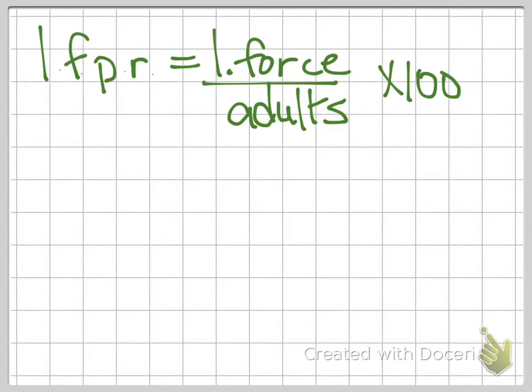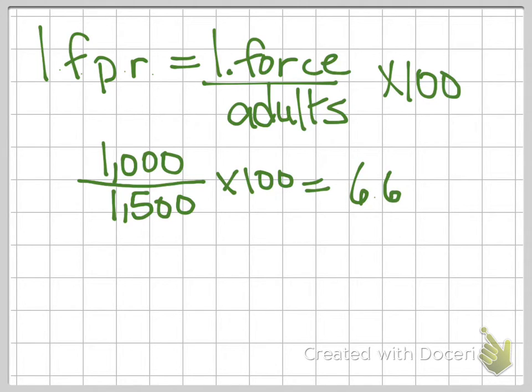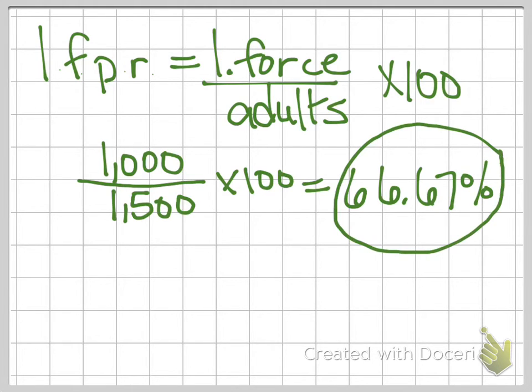So now we're going to calculate the labor force participation rate. And so now it's the number in the labor force, which we just found on the previous screen to be 1,000 people. We're going to divide that by all the adults. In this case, I gave you the number. If you were given a total population, you would just need to subtract out the children to get your total adults. And then we'll multiply again times 100. If you did the calculation, it is... I messed it up there. I went too fast. 66.67% is our labor force participation rate.